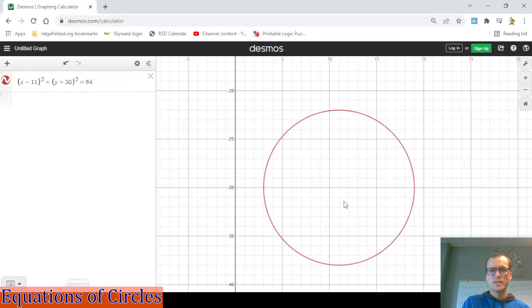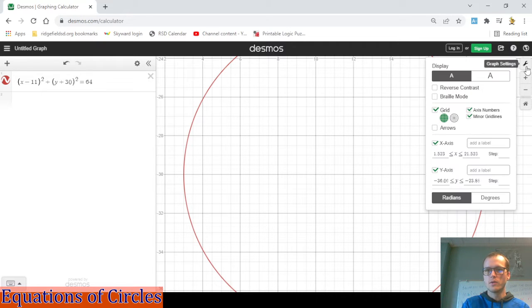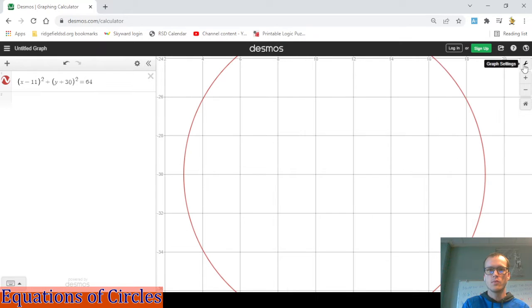Okay, so ours is supposed to be centered at (11, -30). So you can kind of see the coordinates up here. This is 10, 11, 12, 13. Oh, no, that's not true. These are broken down even more than that. Let's change this. I don't want those minor grid lines. They get in the way. All right, now we're counting by twos. 6, 8, 10. So 11 is right between 10 and 12.